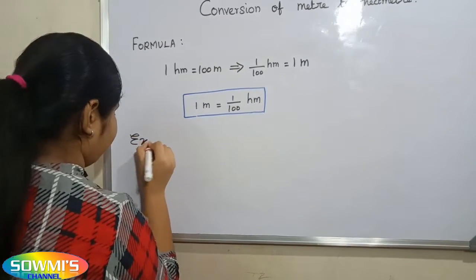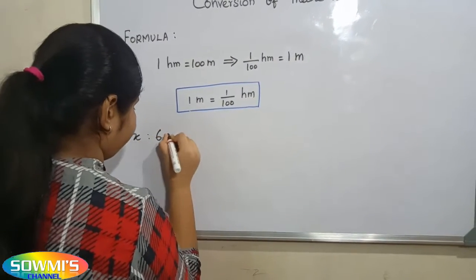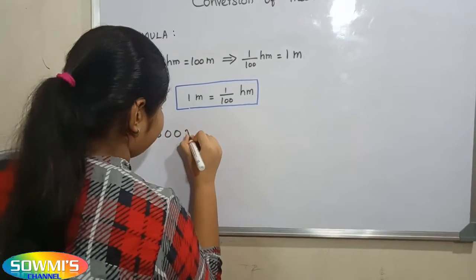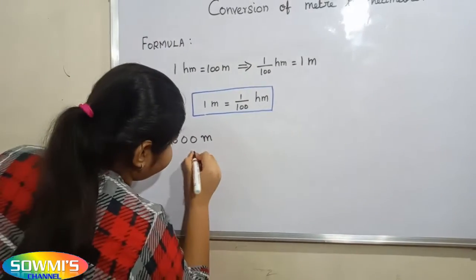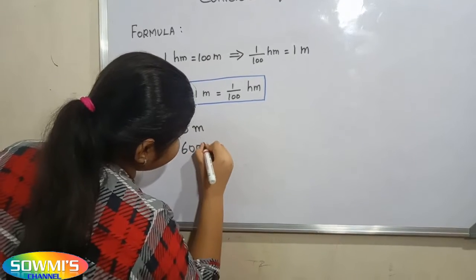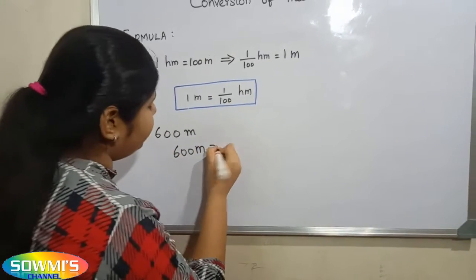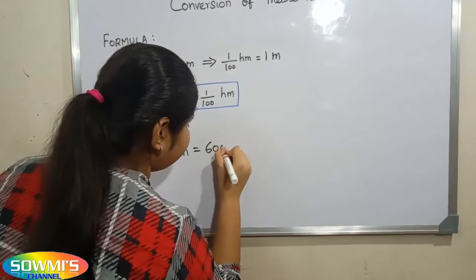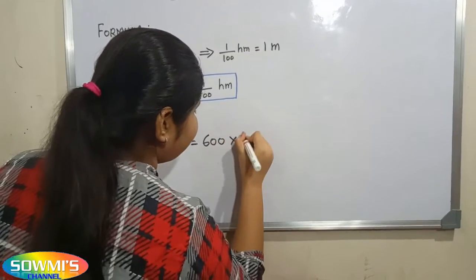For example, 600 meters. 600 meters is equal to 600 multiplied by 1 meter.